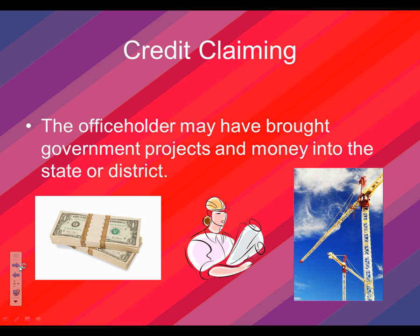Next is credit claiming — and you want to write credit claiming for what. The office holder is going to have brought projects and money back to the district. This is called pork barrel spending. If you bring money back to your district, whether it's a construction project, rebuilding a bridge, getting money for a high school, or getting a road fixed, that's all jobs, that's money, and that's something you can take credit for.